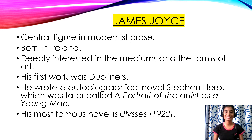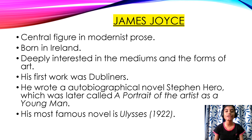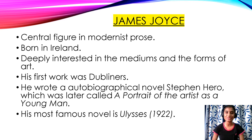The next novelist is James Joyce. He was a central figure in the modernist prose. He was born in Ireland and he was deeply interested in the mediums and the forms of art. His first work was Dubliners, and he also wrote an autobiographical novel, Stephen Hero, which is later known as A Portrait of the Artist as a Young Man. And his most famous novel is Ulysses.